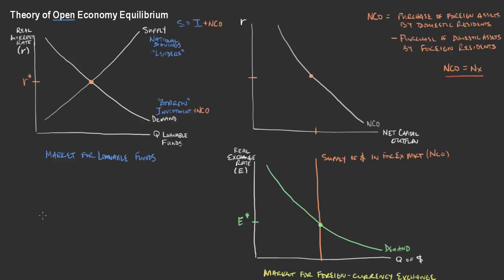Let's think about this in terms of a trade surplus. A trade surplus — you might see it marked as net exports greater than zero — is the case where exports are greater than imports. We are sending more goods overseas that are being purchased than we are purchasing goods made overseas by foreign manufacturers.